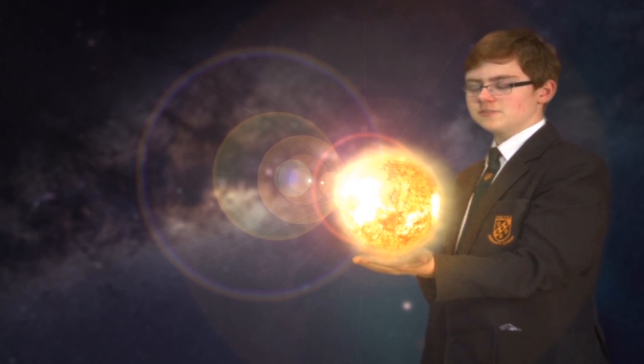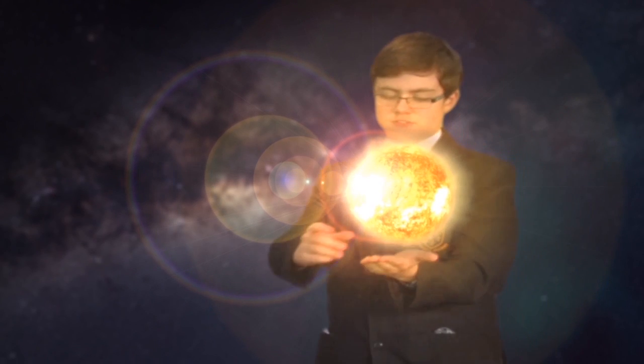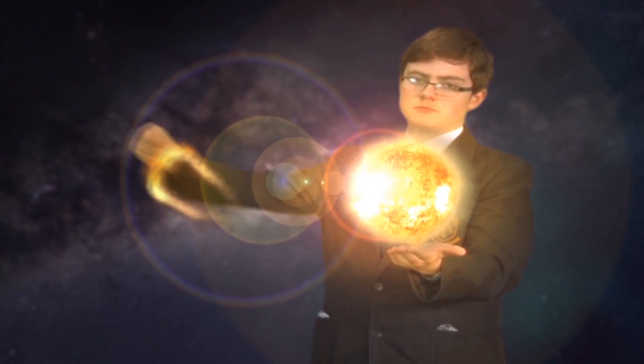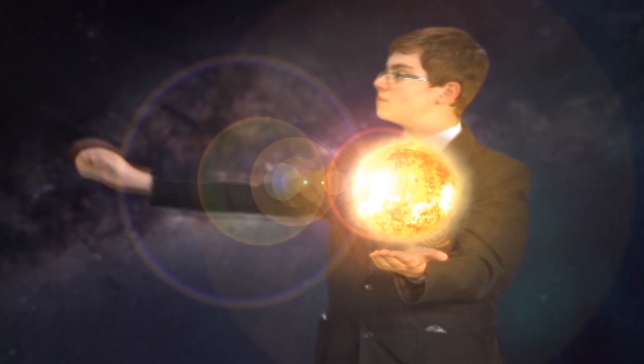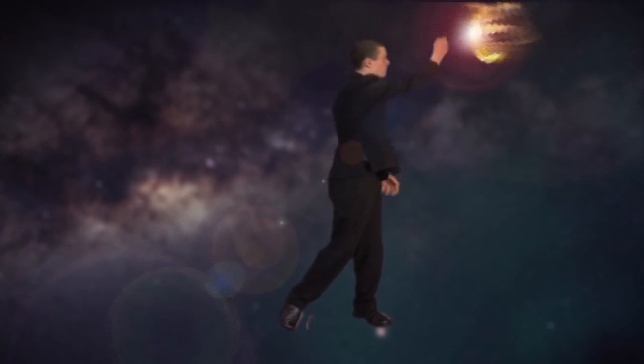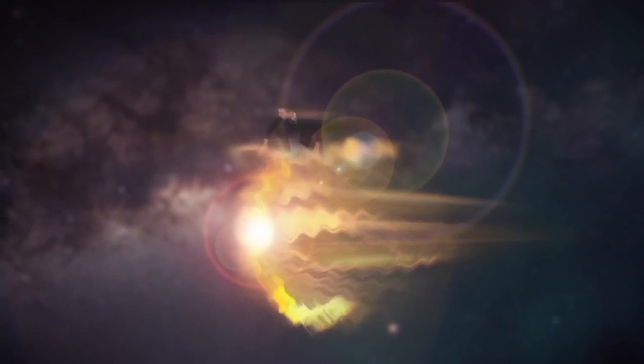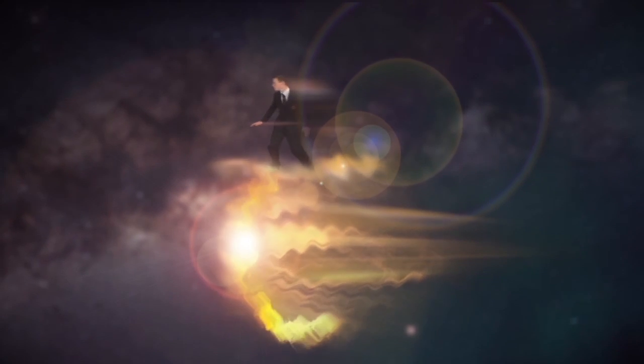The solar flare is what causes the Northern Lights. A solar flare is the releasing of charged particles that come from the Sun. Normally you wouldn't be able to see the solar flare, but this time we've made it visible. The solar flare travels very fast. It travels 2 million miles per hour.